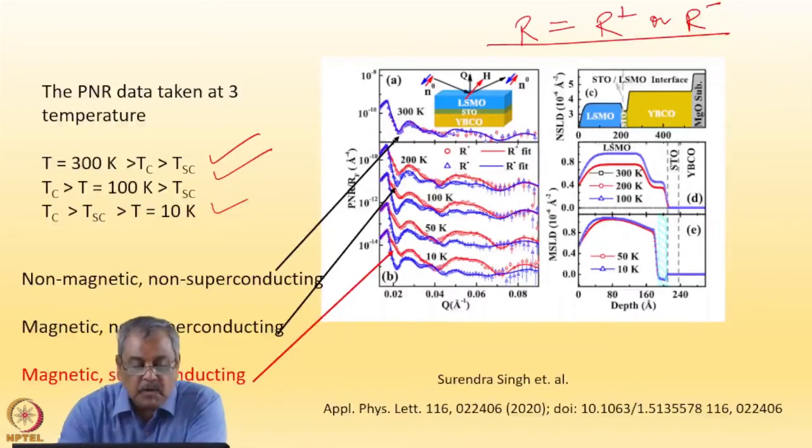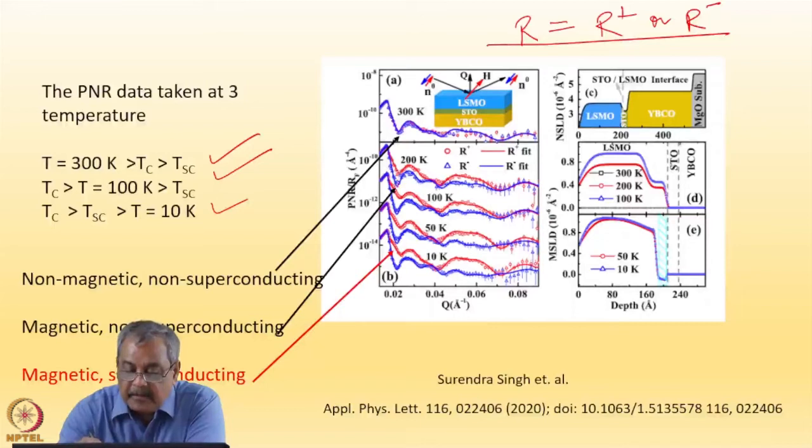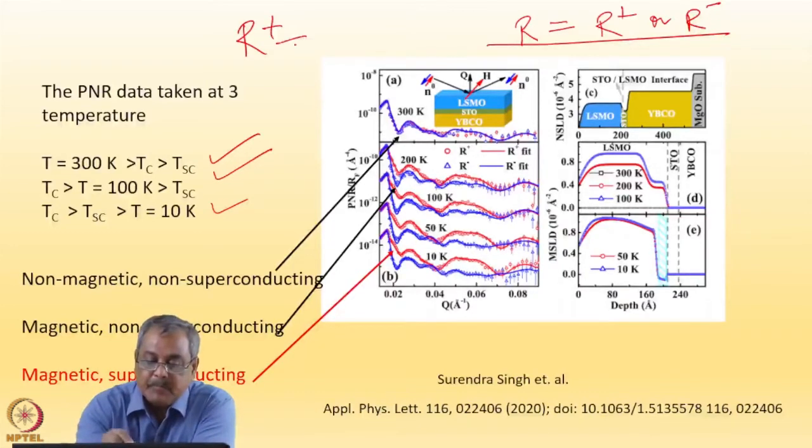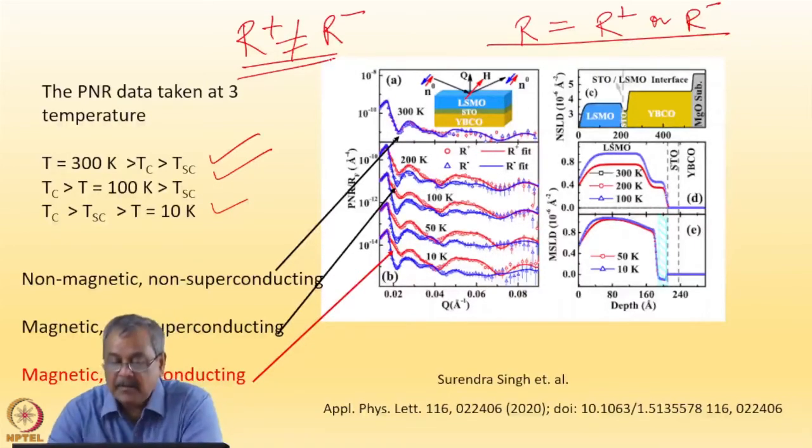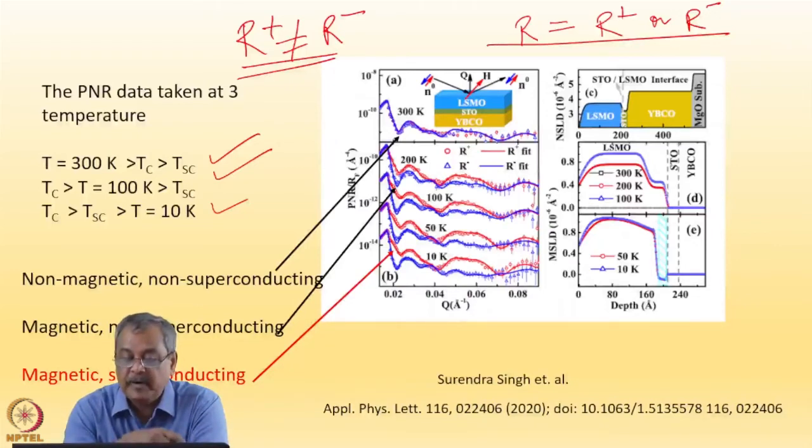Now then, let us go to 100 K data. The 100 K data shows the first signature is that there is a separation between the red and the blue. That means R plus is not equal to R minus. When that happens, the sample has got a magnetic moment density because V plus and V minus are different. Critical angles look different and the samples show different intensity.